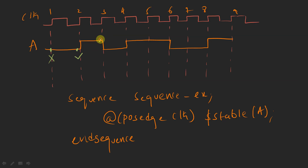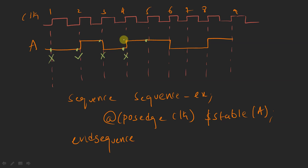At the third clock edge, the value was one, and at the second clock edge the value was zero, so there is a transition — the assertion is going to get failed. At the fourth clock edge, the value was zero and at the third clock edge it was one, so again the assertion is going to get failed. At the fifth clock edge, the current value is one and the previous evaluation point value was zero, so there is a transition — it is going to get failed.